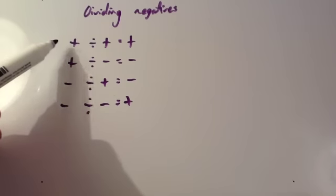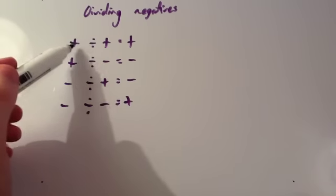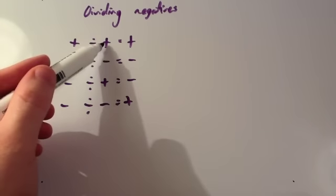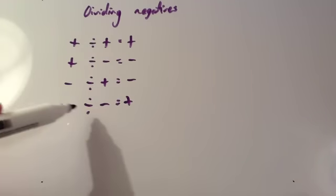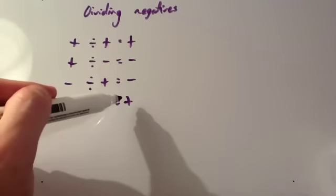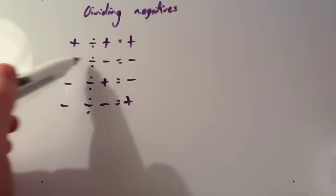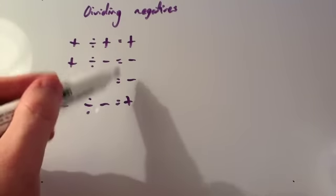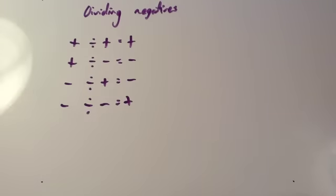The key thing to remember is that if they're the same as each other — a positive divided by a positive, and a negative divided by a negative — you get a positive answer. If they're different to each other, you get a negative answer.